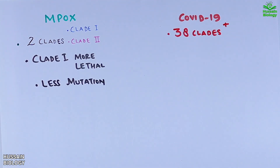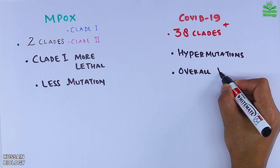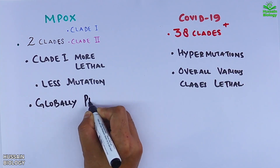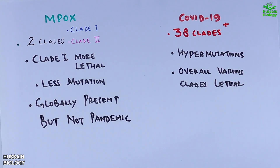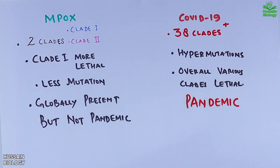In SARS-CoV-2 we have seen hypermutations and most of the clades are lethal. By the numbers it's evident that SARS-CoV-2 is more diverse than monkeypox virus, and that's why COVID proved to be a pandemic whereas mpox is still far from being called a pandemic.